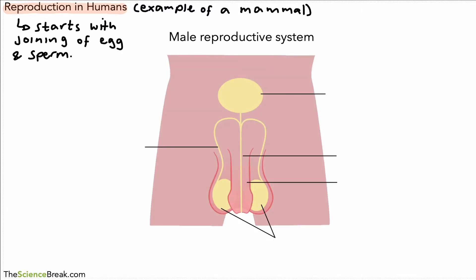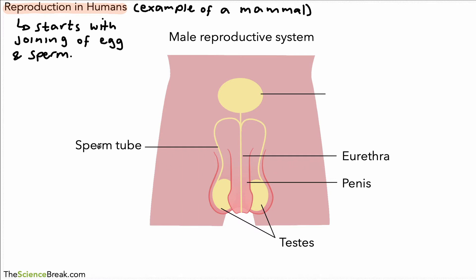Here's a diagram of the male reproductive system, and we can add some labels that we need to know and remember. The first one is right at the bottom — we have two testes, labeled as shown. We have the penis, and then we have a tube that runs down the middle of the penis called the urethra.